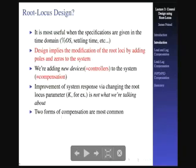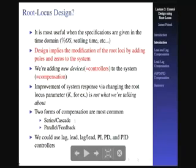So there's two different forms of compensation that are most common, and we're really going to talk about the first one here, series cascade. The other one is parallel feedback, and these are typically ones that most people use, though there are others. And with this, for the compensation, we could use a lag controller, lead controller,